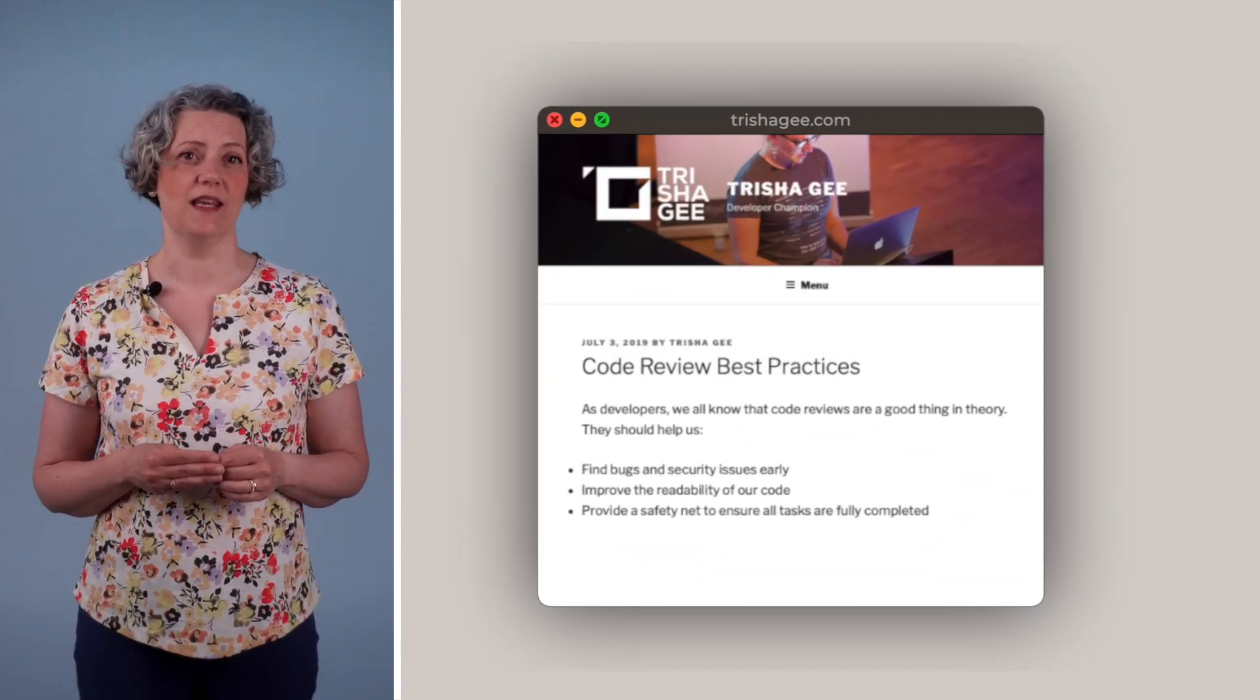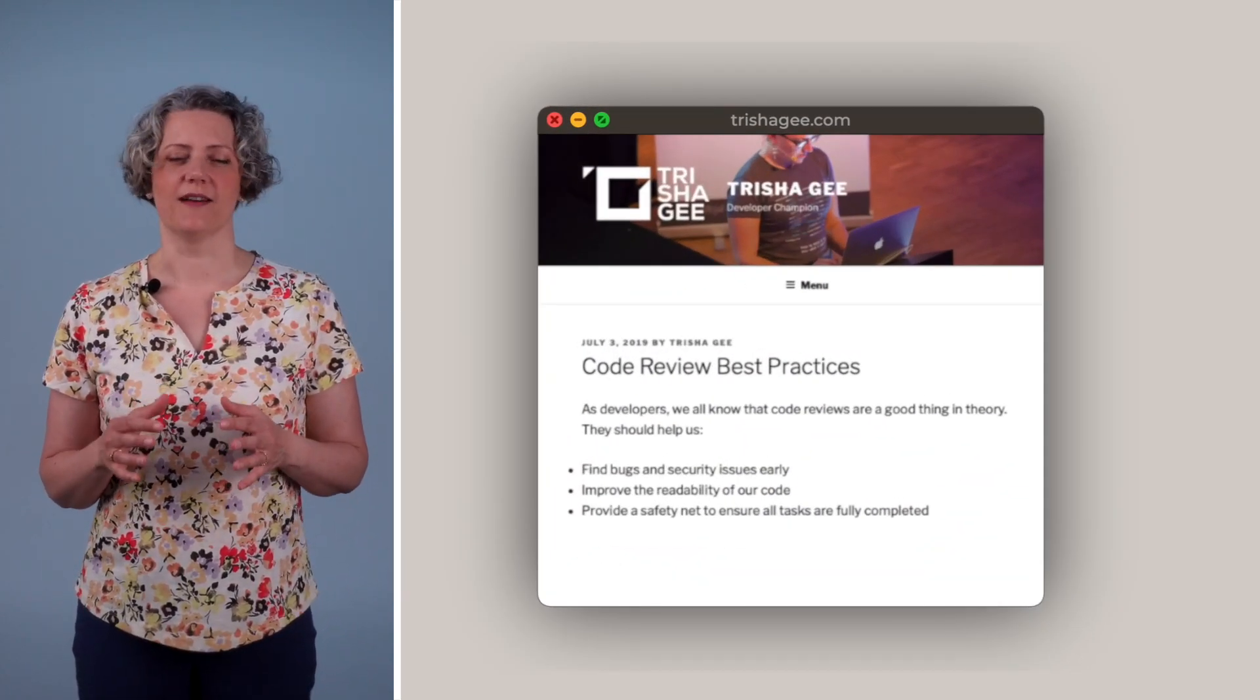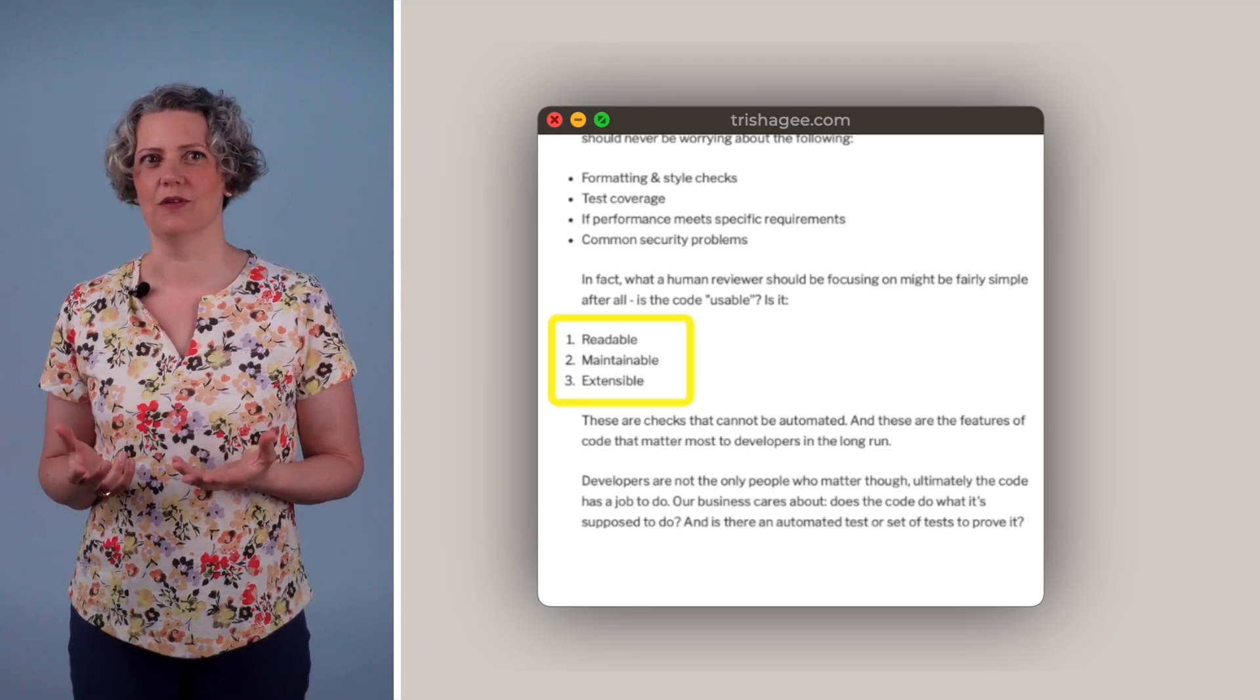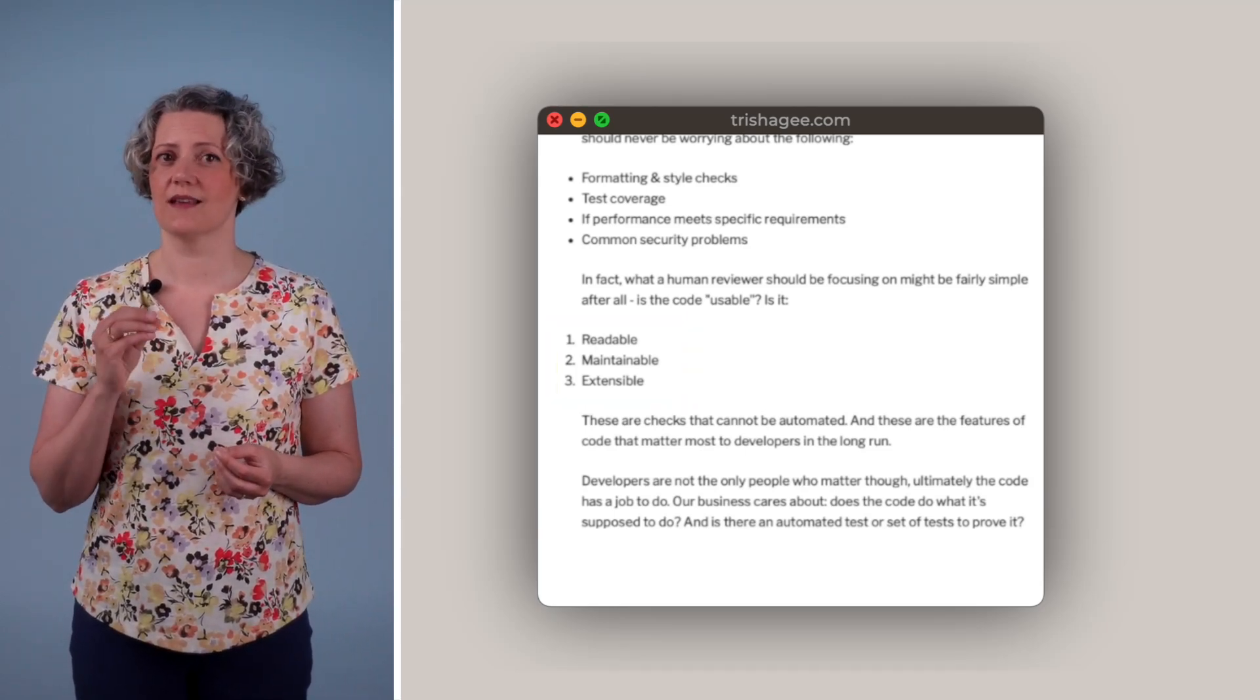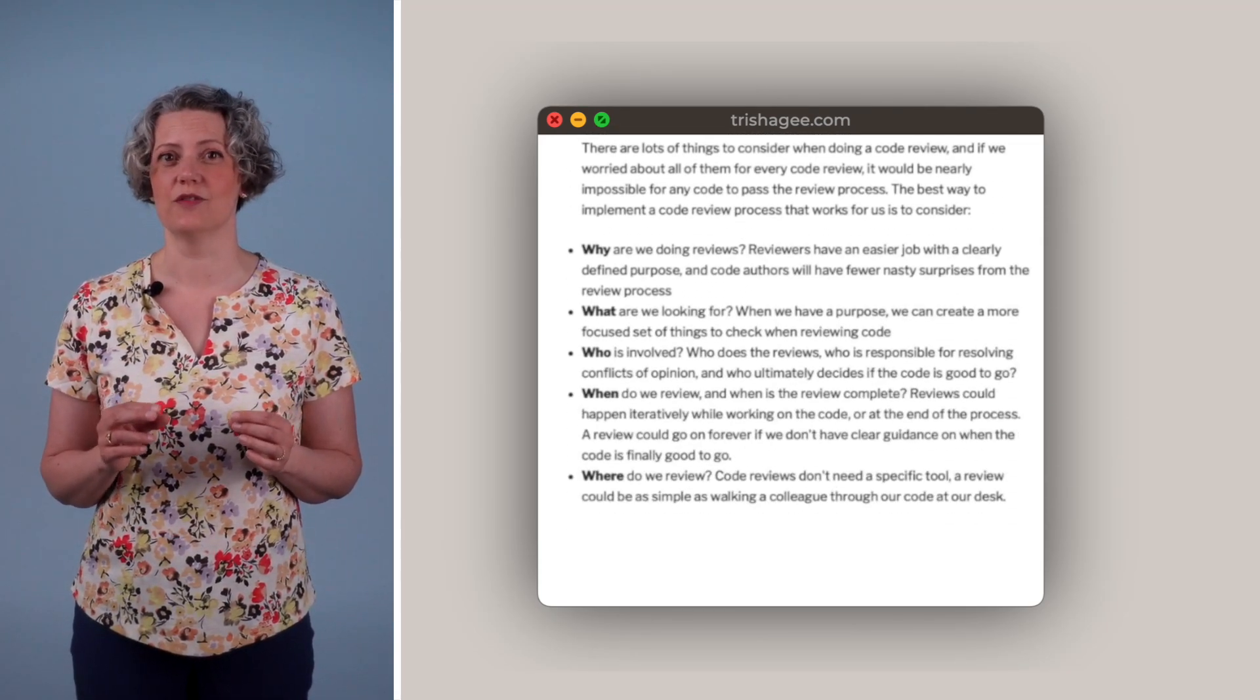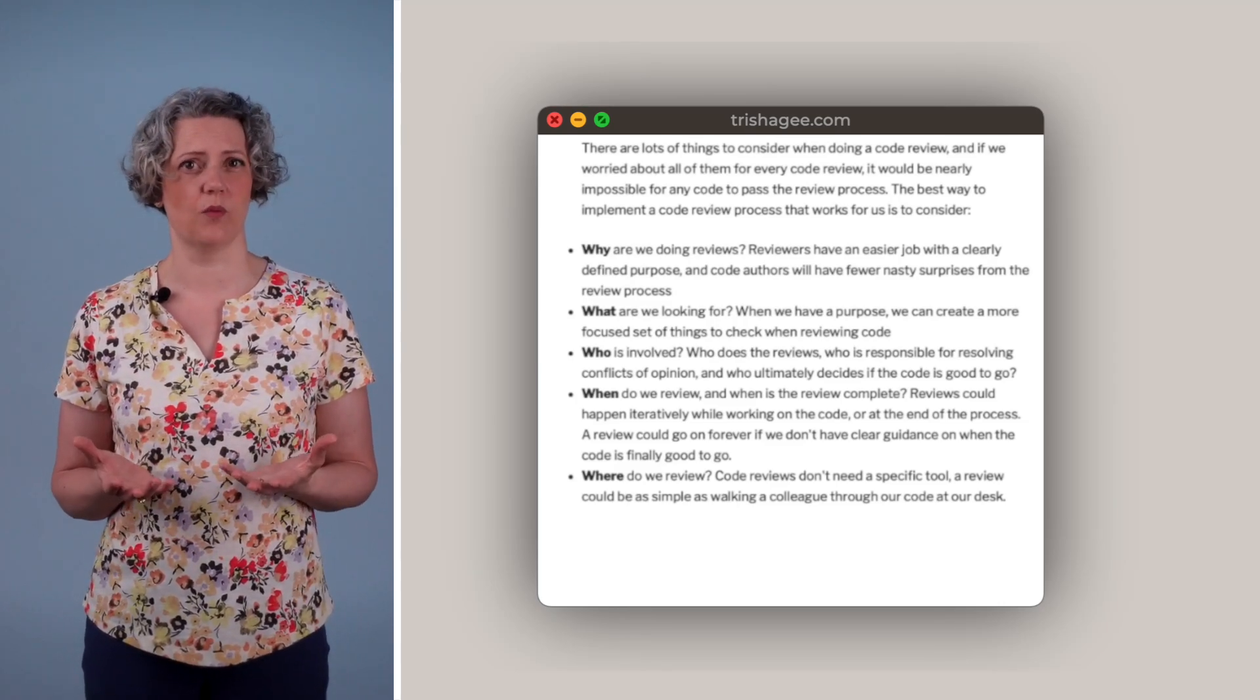There are better and worse ways of doing code review. I'd like to highlight this article by Tricia Gee because I think she knows what she's talking about. Her advice is to focus on checking the things that cannot be automated. Is the code readable? Is it maintainable? Is it extensible? She also suggests that you think carefully about the whole process that the reviews are part of. Pull requests isn't the only way to do code reviews and decoupling the review from the merge process can be a more effective way of doing things.